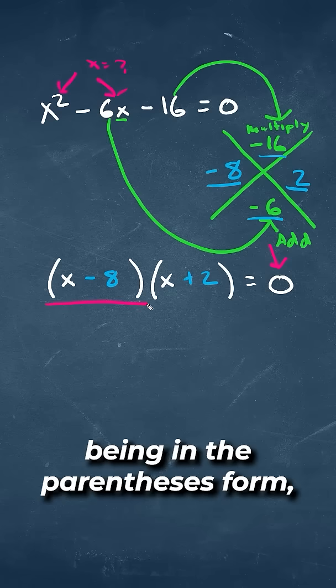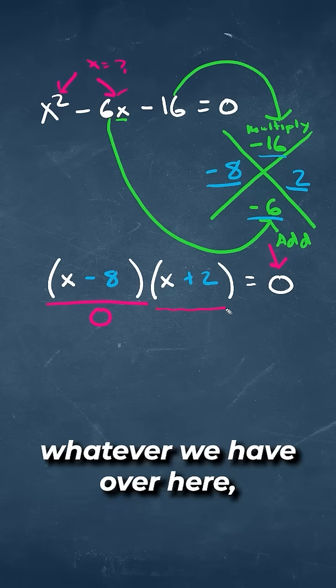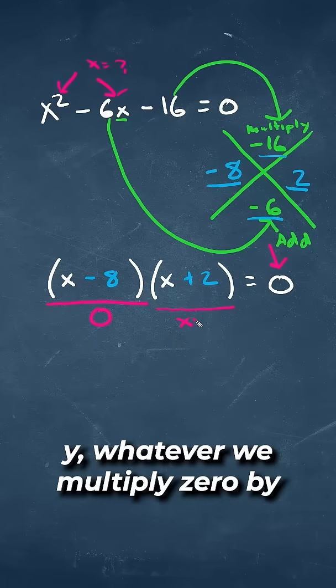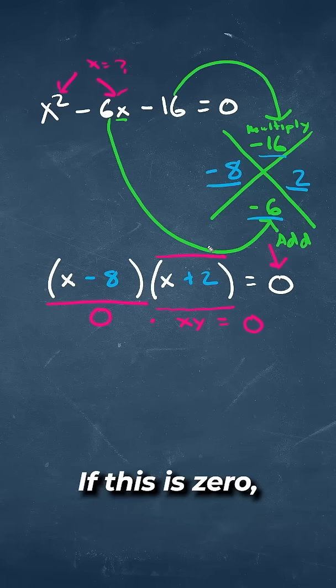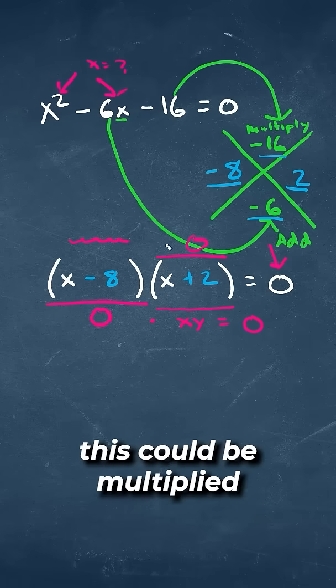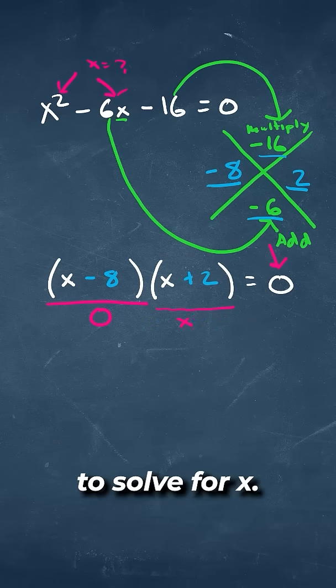Since we have 0 on this side, being in a parentheses form, if this is equal to 0, whatever we have over here, whatever we multiply 0 by will always end up as 0, and vice versa. If this is 0, whatever this could be multiplied by 0 is always equal to 0.